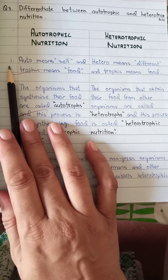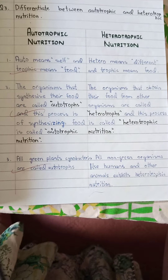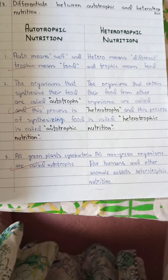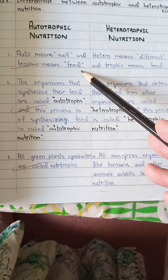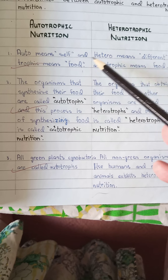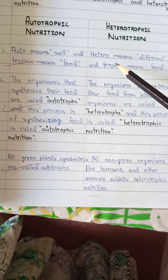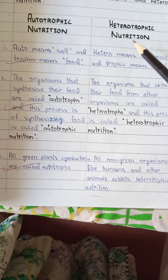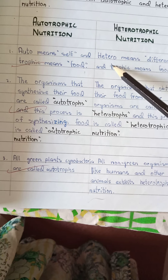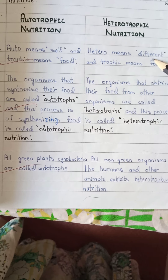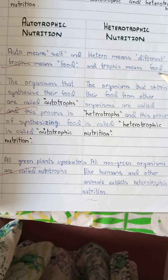First point: for autotrophic nutrition, auto means self and trophic means food. In heterotrophic nutrition, the first point is hetero means different and trophic means food.